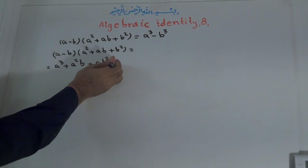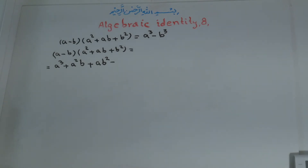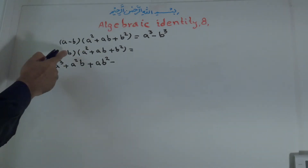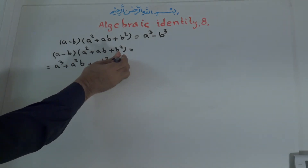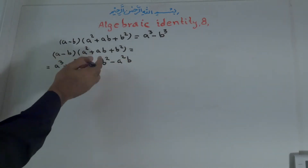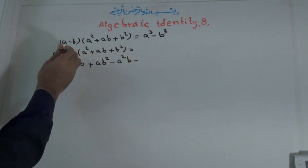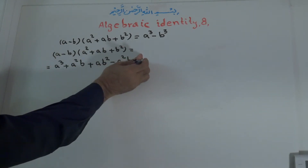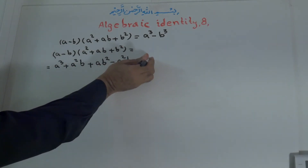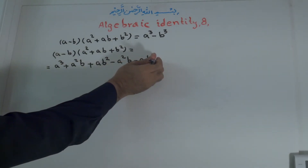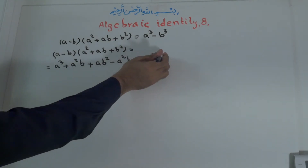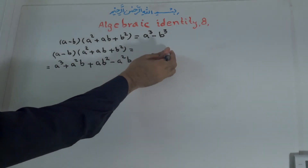Negative times positive is negative. B times A² is A²B. Negative times positive is negative. B times AB is AB². And negative times negative — B¹ times B is B², so B to the power of 3.